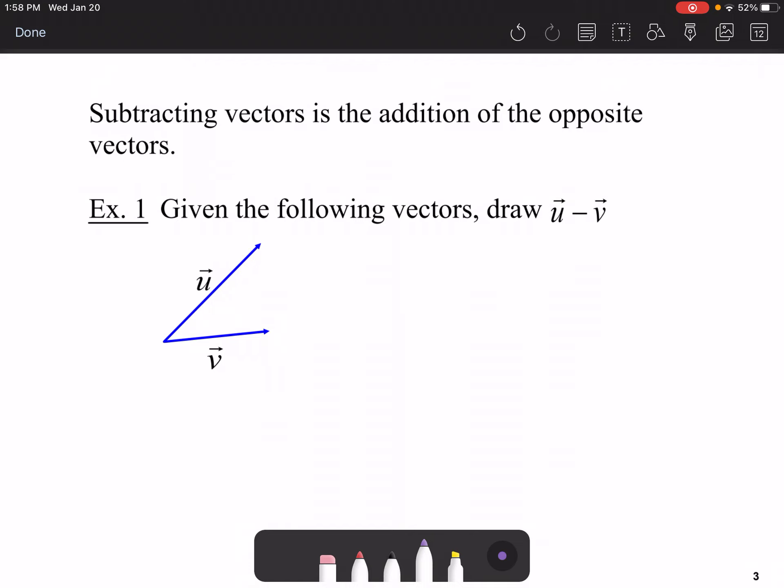When subtracting vectors, please realize you're adding the opposite vectors. Let me show you an example of this using what we have here. Let's say we wanted to find out how to draw U minus V. Well, what you're going to do is you're going to draw U and you're going to add negative V to it.